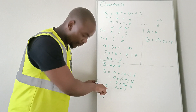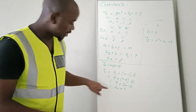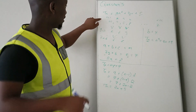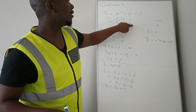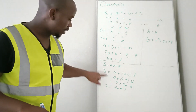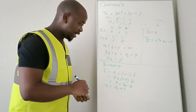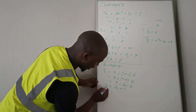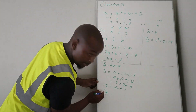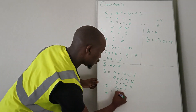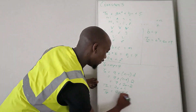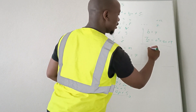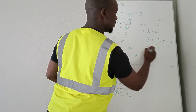Since the question uses n both for the original sequence and for the first differences, they want us to denote it using p to avoid confusion. So the answer is Tp = 2p + 5. This equation describes the first differences of the quadratic pattern.